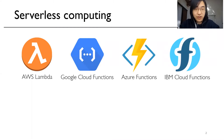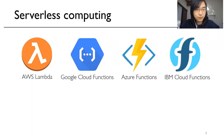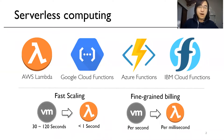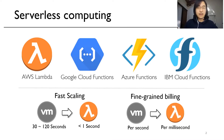Serverless is becoming an exciting new paradigm for cloud computing. Many cloud providers are providing serverless platforms such as AWS Lambda, Google Cloud Functions, and so on. At its very core, serverless provides both fast scaling and fine-grained billing, which enable users to easily scale up and down any number of workers or functions at any time. This makes serverless a great fit for distributed analytics workloads.